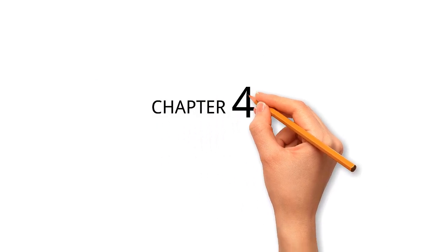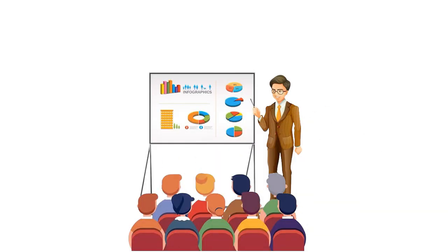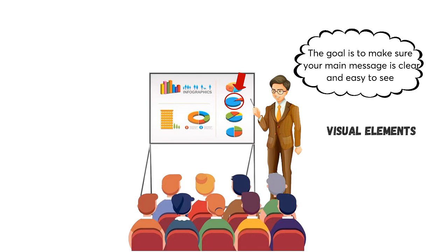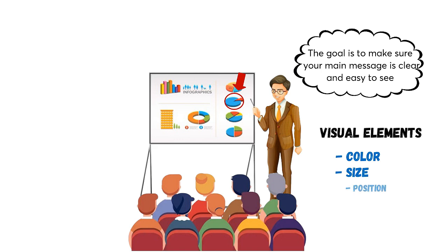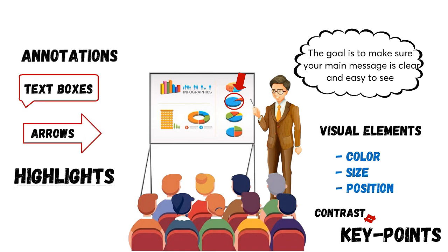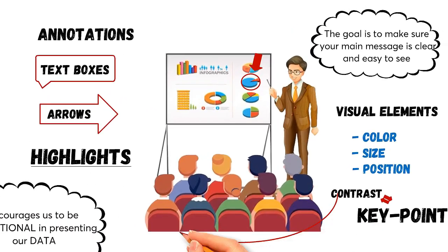Chapter 4 is titled Focus Your Audience's Attention. Cole highlights the need to direct your audience's attention to the most important parts of your data visualizations. The goal is to make sure your main message is clear and easy to see. To present data clearly, use visual elements like color, size, and position. Remove any unnecessary details, use contrast to emphasize key points, and add annotations like text boxes, arrows, or highlights to guide the viewer's attention and make the data easy to understand.